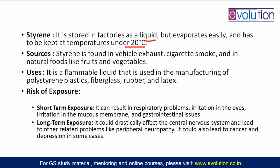What are the sources of styrene? They are not only artificial — styrene is a monomer that can also occur naturally. It is present in vehicle exhaust and cigarette smoke in very small, harmless quantities, and naturally in some fruits and vegetables. It is a flammable liquid that can catch fire, and it is used in the manufacturing of polystyrene plastic. Polystyrene is used to make plastic, fiberglass, rubber and latex — used in industries including automobile manufacturing.